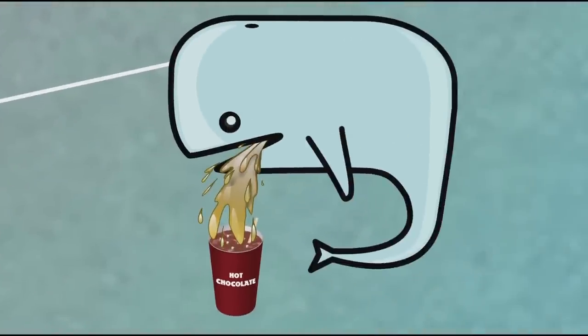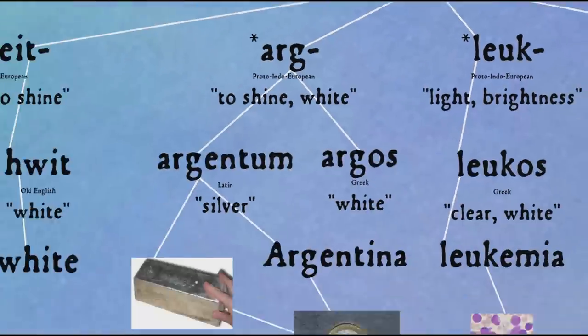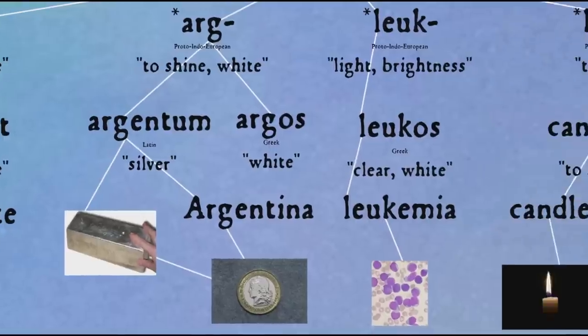In addition to 'ghel' and 'bhel', there are a surprising number of other Proto-Indo-European roots that mean 'to shine' — many of which produce colour words in one language or another. For instance, there's 'arg', which leads to a Greek word for white, but also the Latin word for silver, 'argentum', and therefore Argentina, where all the silver comes from. And there's 'leuk', which becomes Greek 'leukos' (clear white), giving us 'leukemia', a disease that affects white blood cells.